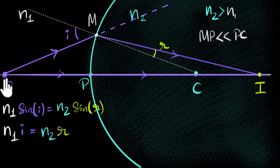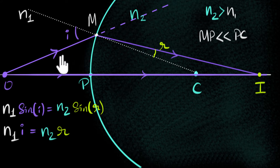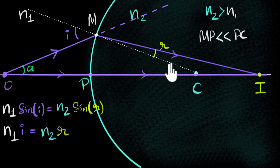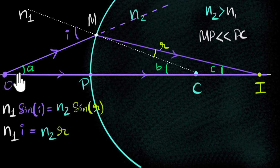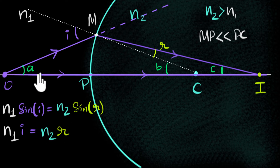We need to connect the object distance and image distance. We define three new angles: angle a, angle b, and angle c. We can connect angles i and r with a, b, and c using properties of triangles — and then define those angles in terms of the relevant lengths. That's the flow: bring a, b, c into the picture, then express them in terms of distances.